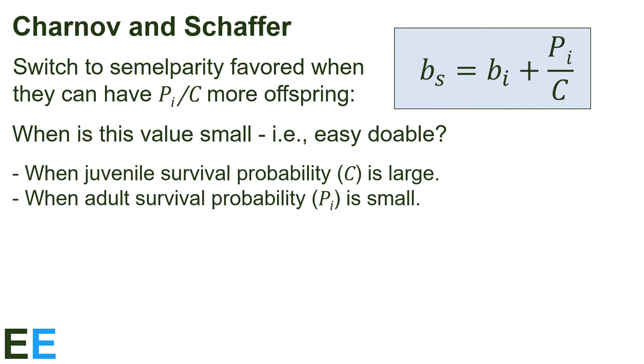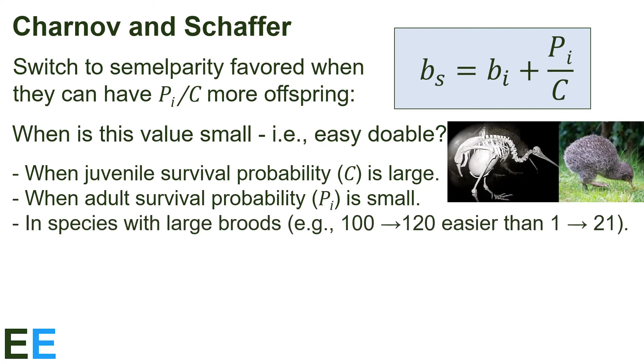A third point that doesn't come directly from the equation, but is also a factor to consider, is how this increase in birthrate compares to the starting value. In species with large broods, having extra offspring is more feasible. For example, if P sub I over C was 20, then going from 100 to 120 is easier than going from 1 to 21. The kiwi shown there would be hard pressed to increase the number of eggs it lays because there just isn't room for more. Now that we have this result, let's ask ourselves which creatures are semelparous.